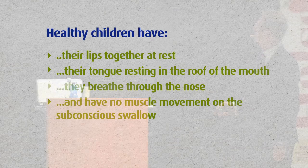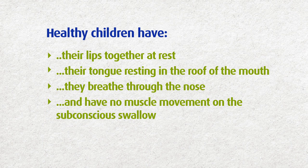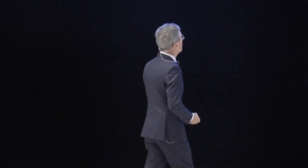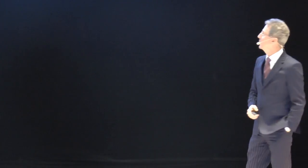So if children want to be healthy, they need these four patterns: they need to have their lips together at rest, tongue in the roof of the mouth, breathing through the nose, and no muscle movement on the subconscious swallow. And if they grow up with those patterns, they will have straight teeth. And if they're missing any of those patterns, then they won't have straight teeth.